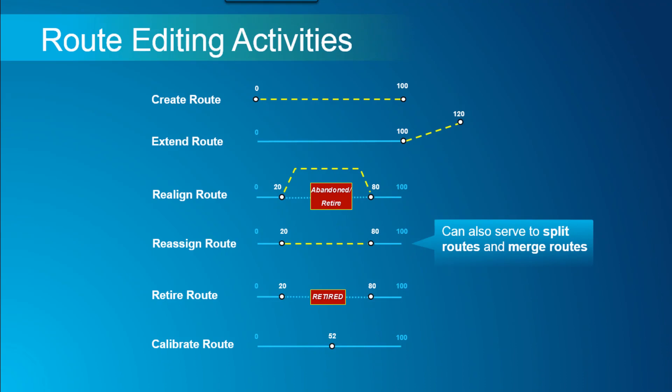The various route editing activities we support in Pipeline Referencing include create, extend, and realign — where realign is similar to reroute. In realignment we support an abandonment option or a retirement option. Reassigning a route is similar to merging and splitting. We also support retirement and calibration of routes. These editing activities help pipeline organizations manage their center line data.